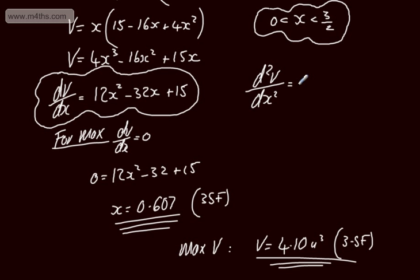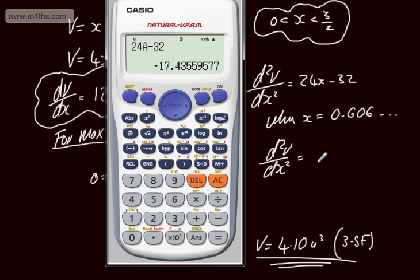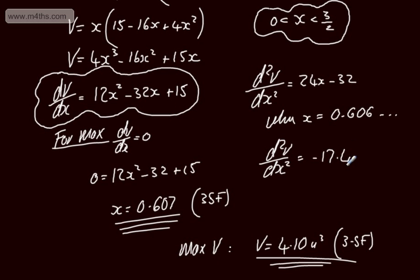d²V by dx squared is going to be 24x minus 32. We can say now, when x is equal to 0.606, d²V by dx squared is going to be 24 lots of that minus 32. So let's calculate that. 24 lots now. So 24A, then we're going to have minus 32. So what's that going to give me? That's going to give me now minus 17.4. Let's write that there. Minus 17.4. Therefore, max as we can say d²V by dx squared is going to be less than 0.